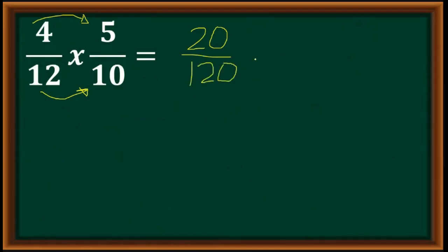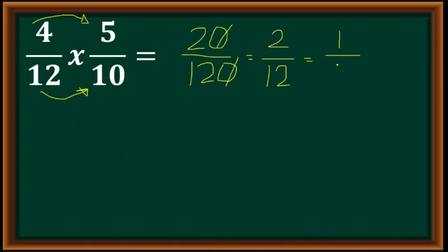A shortcut: since there is a 0 on the numerator and a 0 on the denominator, we can cancel those. So we have 2 over 12. Since 2 over 12 has a lower term, we divide both sides by 2: 2 divided by 2 is 1, and 12 divided by 2 is 6. This is our final answer — 1 over 6.